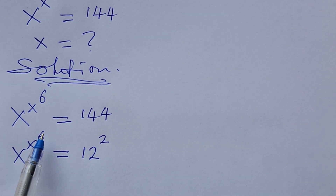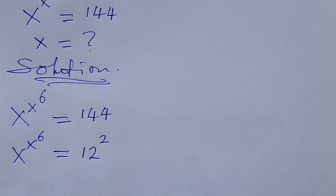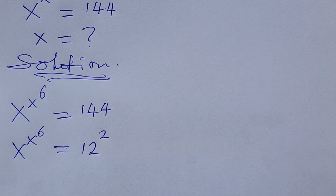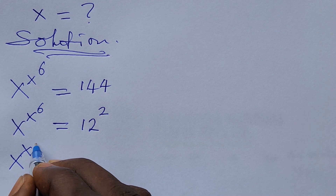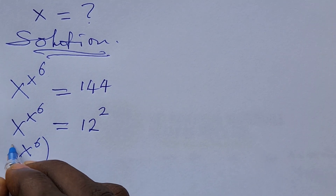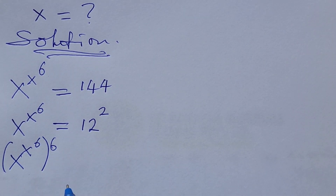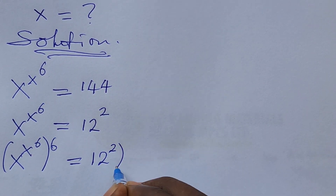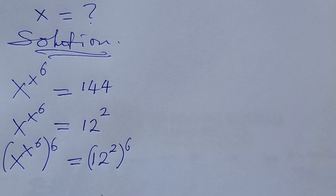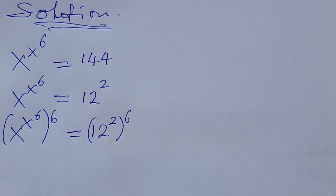What we do here is raise both the left-hand side and the right-hand side to the power of 6. Multiplying the exponent by 6, this gives us x to the power of x to the power of 1/6, all raised to 6, equal to 12 to the power of 2, also raised to the power of 6.